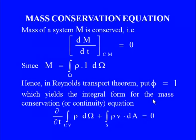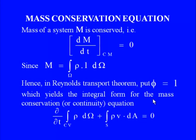For mass conservation in a non-relativistic framework, the mass of a system is always fixed: dM/dt = 0. Mass M can be defined as ∫ρ·1 dΩ, so the intrinsic quantity linked with mass is density ρ. Setting φ = 1 in Reynolds transport theorem gives the integral form of the mass conservation equation — the continuity equation: ∂/∂t(∫ρ dΩ) + ∮ρv·dA = 0.